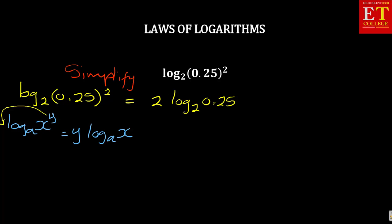Now, the next thing that we must realize is 0.25 is difficult to work with unless we change it into a fraction. This is same as 25 over 100, which is same as 1 over 4. So if we continue with that, we'll have this is equal to 2 log 1 over 4.